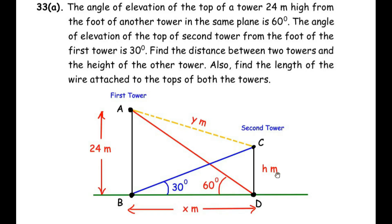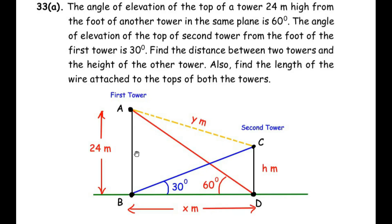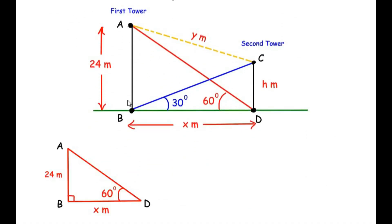We need to find X, H, and Y. There are two right-angled triangles formed: triangle ABD and triangle CDB. Let us separate out the triangles and begin with triangle ABD. In this right-angled triangle, AB is 24 meters, BD is X meters (the unknown distance between the towers), and the angle of elevation at point D is 60 degrees. The side opposite to 60 degrees is AB (24 meters), making it the opposite side. AD is the hypotenuse, and BD is the adjacent side.